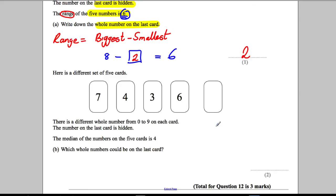Now let's move on. Here is a different set of 5 cards. There is a different whole number from 0 to 9 in each card. Each one must be different. So let's just quickly think about this. We've got 0, 1, 2, 3, 4, 5, 6, 7, 8 and 9.